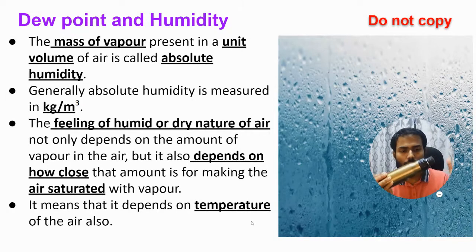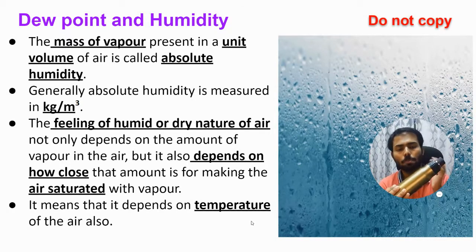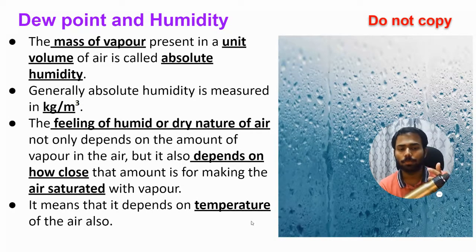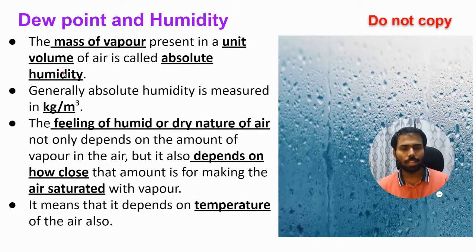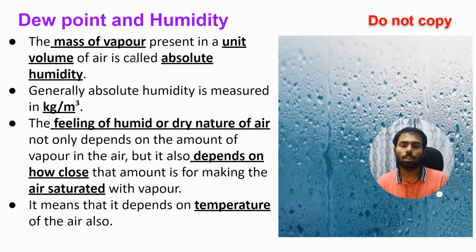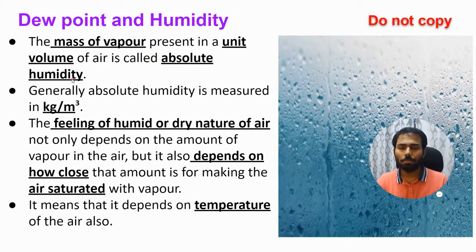If the bottle's size decreases — the holding capacity decreases — and the water inside remains the same, then it comes closer to saturation. So temperature also determines whether it will feel humid or not. This shows us that absolute humidity alone is not enough — we need to compare how much more water vapor is needed to make the air fully saturated. That information is not available from absolute humidity alone, so we need a new quantity.